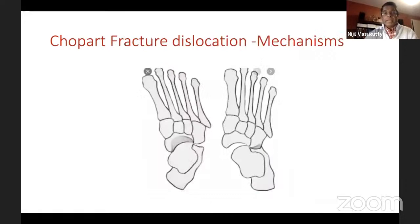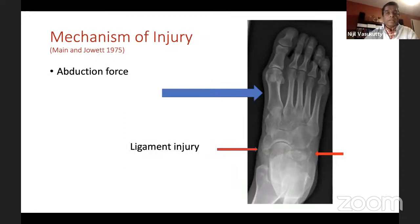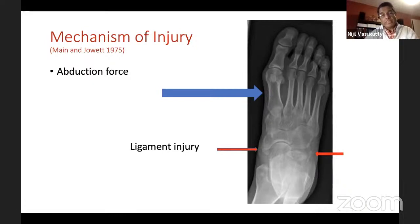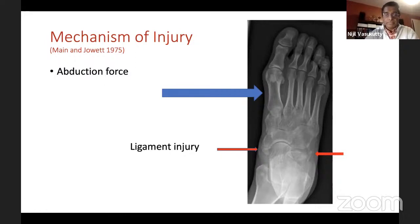What are the mechanisms of injuries for a Chopard fracture dislocation? This was published over 40 years ago by Maynard Jowett. When you see a mid-foot injury that looks mild — say, an undisplaced cuboid or an undisplaced navicular fracture — there could be more to it than meets the eye on plain X-rays. Consider the mechanism: if there is an abduction force, there is compression on the lateral side but a distraction force on the medial side, leading to ligament injury. This is a through-and-through injury across the Chopard joint, making that segment unstable.